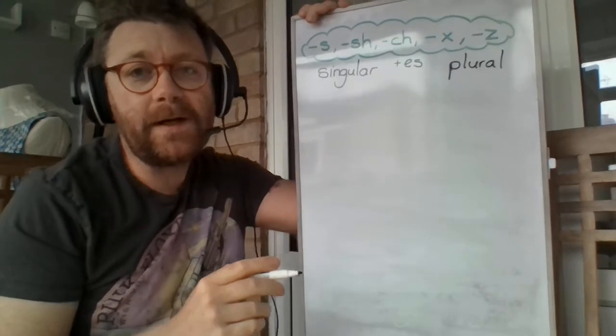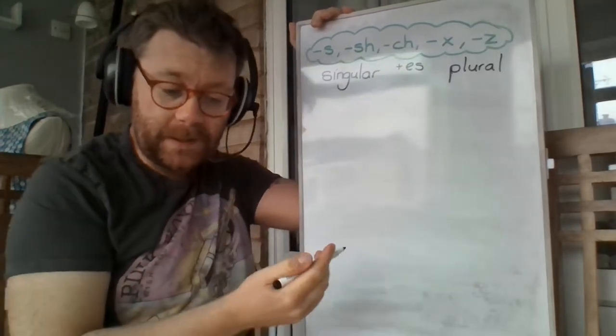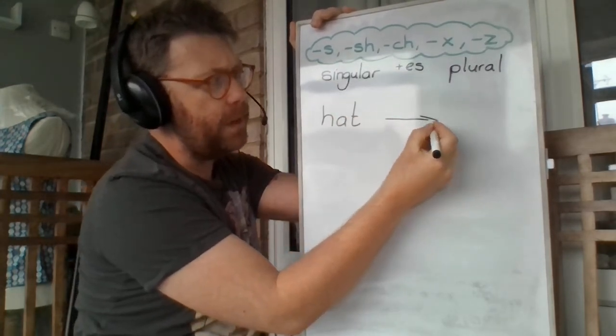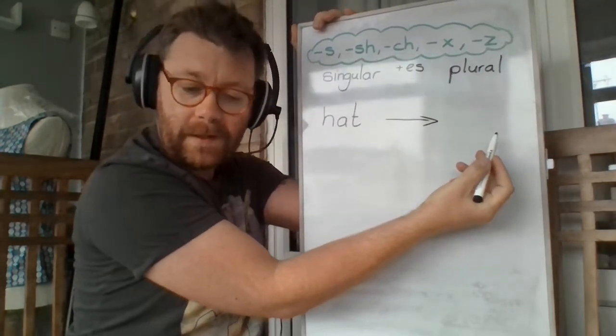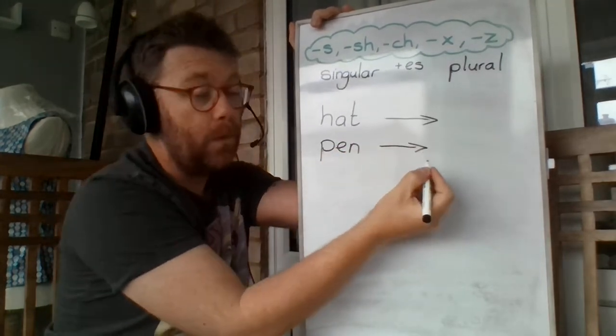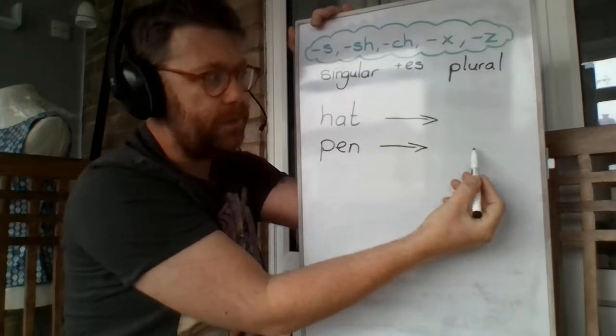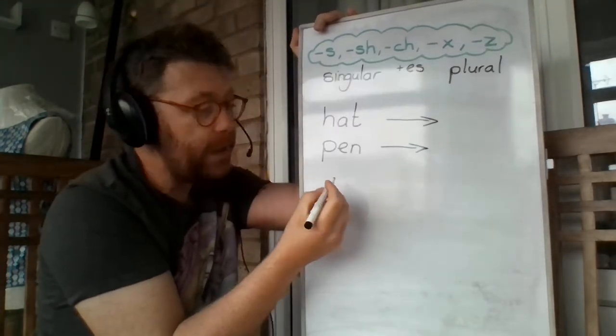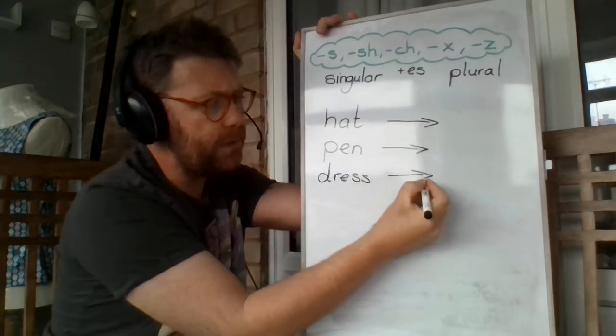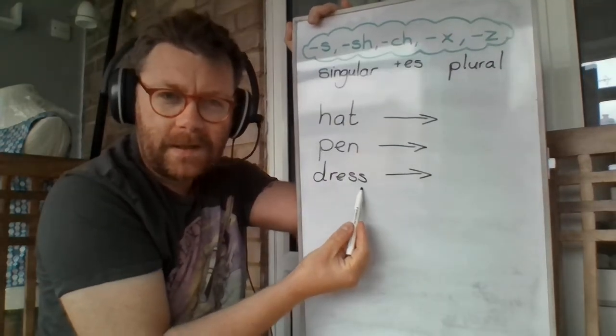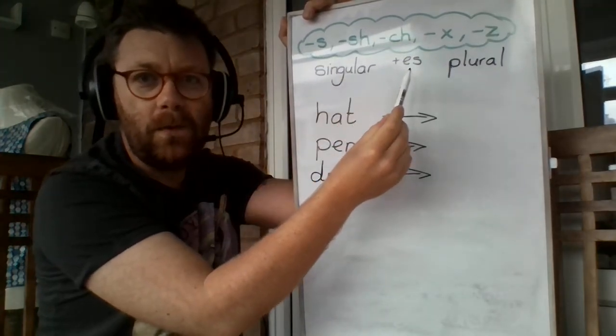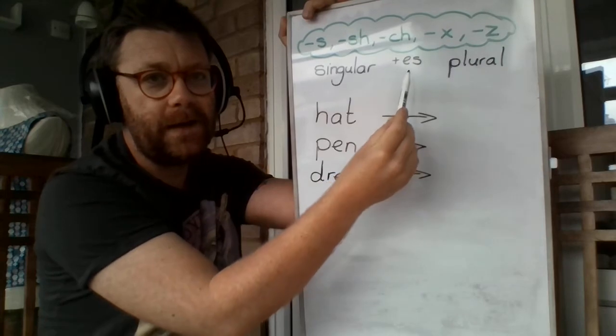So the first word I want you to go and have a look at changing from singular into plural is going to be the word hat. I have got one hat. Well, I have got lots of... You need to write that in there. The next word is pen. I have got a pen. I have got lots of... You have to write that word in there. I am going to wear just one dress. Well, I am going to wear lots of... What does it end in? Can you see? Is that one of our sounds up here? It is.